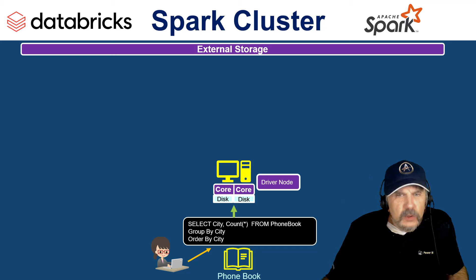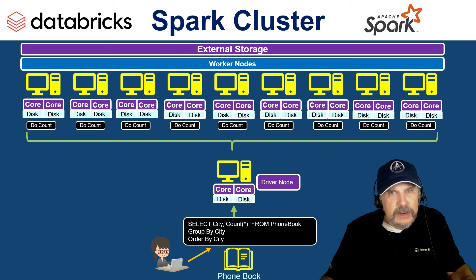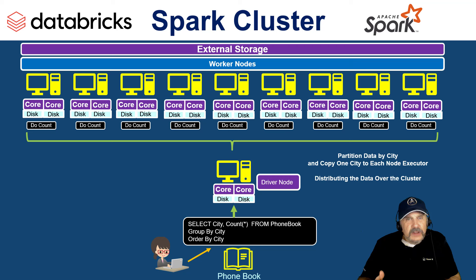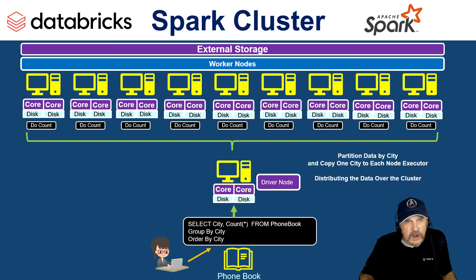The query goes to the driver node, and the driver node orchestrates what needs to happen. The data was originally organized by the person's last name, and it says, that's not going to work — I need to run this query to do a count by city. The only way to do this query in parallel is to reorganize the data and put a single partition on each executor, which is a core within each VM. A partition is just a way to chunk up the data — get all of New York City together and send that to be counted, then Albuquerque, then Schenectady. Each chunk is sent to a different core where it's processed as a task.